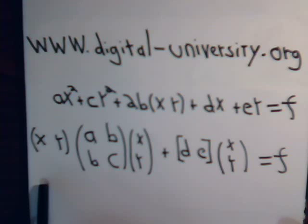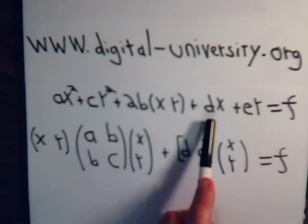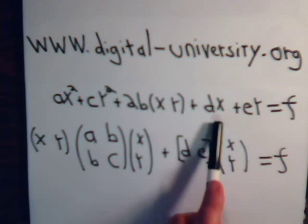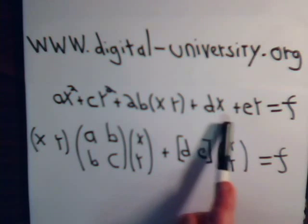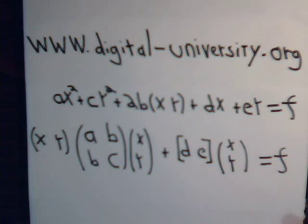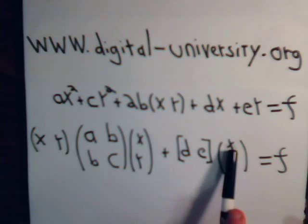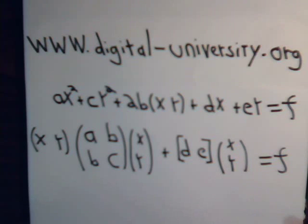Then these remaining terms could just be a row vector d E made out of these two coefficients times a column vector xy, because this would just be dx plus ey equals f. And again, we started discussing this in video number 36.